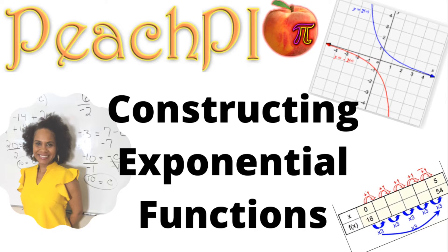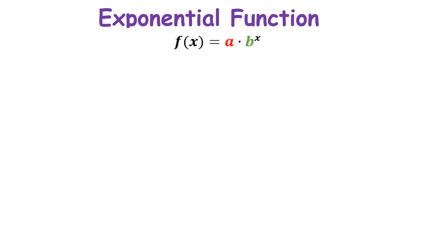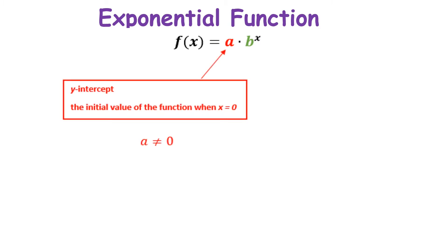In this lesson we're going to cover constructing exponential functions from either a graph or a table. For an exponential function we use f(x) = a·bˣ, or you can replace f(x) with y. The 'a' represents the y-intercept or the initial value of the function when x is zero. If you have a graph, it is going to be on your y-axis, and if you have a table it will be the ordered pair where your x is zero.